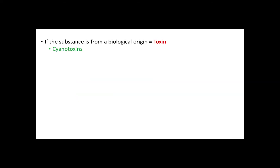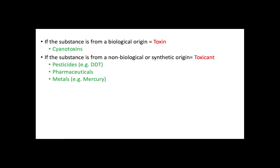Now, it is important to classify the toxic substances that reach the environment. Several people will classify any substance that causes toxicity as a toxin, but this is incorrect. Toxins are substances that originate from a biological source, like cyanotoxins from harmful algal blooms or even snake venom. On the other hand, toxic substances originating from non-biological sources or from human activities are classified as toxicants, and examples include pesticides, pharmaceuticals, and metals.